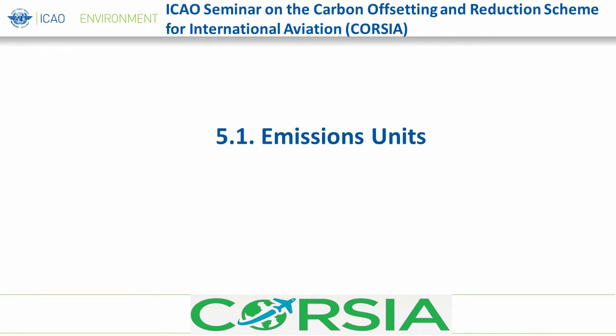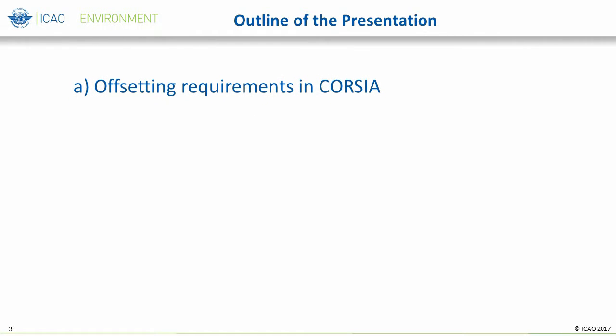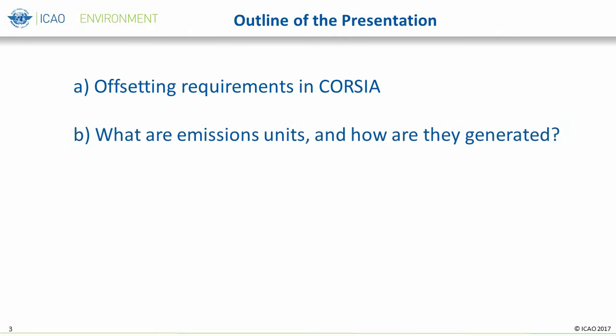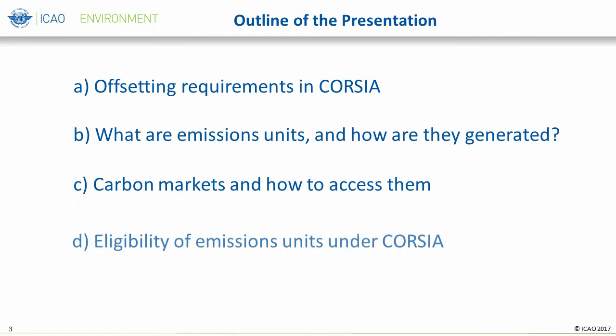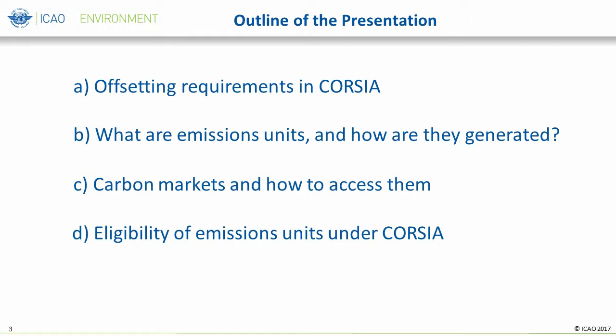We will first start with a discussion on Emissions Units. In this part of the presentation, we will provide a brief refresher on the offsetting requirements in CORSIA, which was originally presented in the second online CORSIA tutorial discussing Assembly Resolution A-39-3. We will continue with an explanation of Emissions Units and how they are generated, briefly talk about carbon markets, and then discuss the eligibility of Emissions Units under CORSIA.